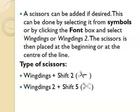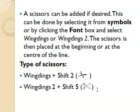A scissors symbol can be added to the cutoff line if desired. This can be done by selecting it from Symbols or by clicking the font box and selecting Wingdings or Wingdings 2. The scissors is placed at the beginning or center of the line. If you select Wingdings and press Shift+2, one style of scissors is displayed. If you select Wingdings 2 and press Shift+5, a different scissors symbol is selected.